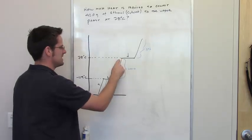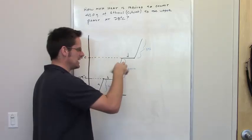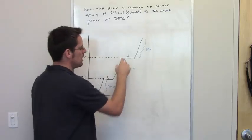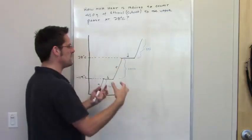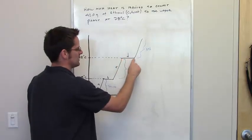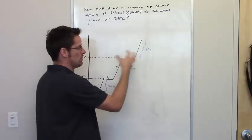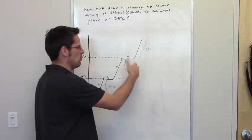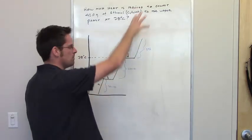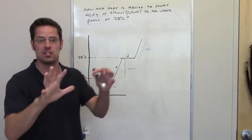At some point you'll get to 78 degrees Celsius. Any additional heat you add will not change the temperature, but will all be used to convert that liquid into a gas. It will remain a gas at one atmospheric pressure for any temperature above 78 degrees Celsius.